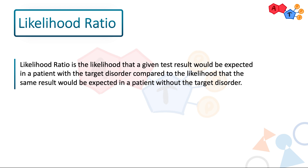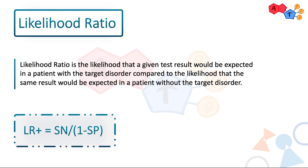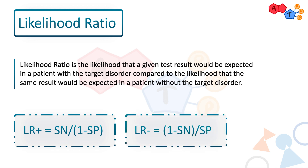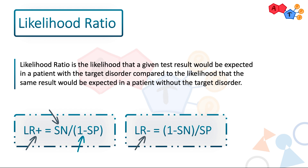Here are two tips to recall the formulas if you're in an exam. One: sensitivity is always in the numerator and specificity is always in the denominator. Two: to remember where the 1- goes, just remember what's on top. If it's positive likelihood ratio, positive is on top, and the 1- goes to the denominator. If it's negative likelihood ratio, the negative goes on top, so the 1- is in the numerator.